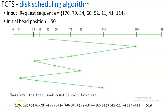Finally you calculate the total seek count. You subtract positions at each step: 176 minus 50 (starting from 50 and reaching 176), plus 176 minus 79, plus 79 minus 34, plus 60 minus 34, plus 92 minus 60. From the larger number you subtract the smaller one at each step. You sum up everything and you get the total seek count.